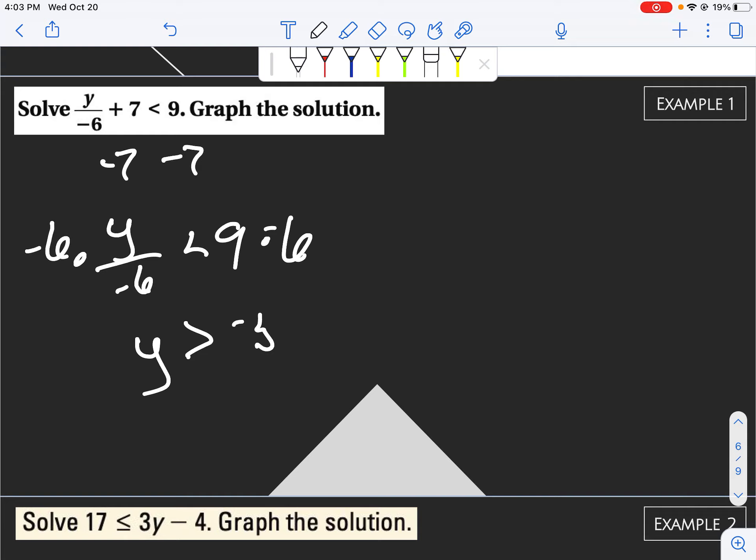Oh, whoops. 9 minus 7 is not 9. One of you guys would have caught me in class. 2. There we go. 2 times negative 6 gives me negative 12.